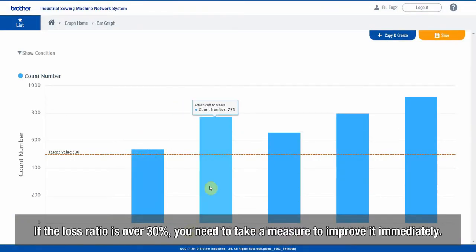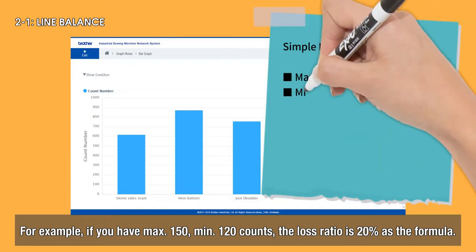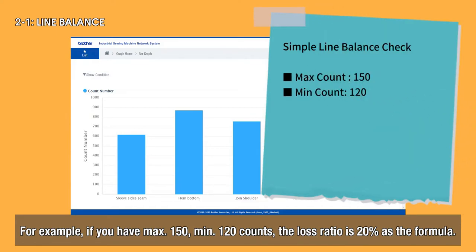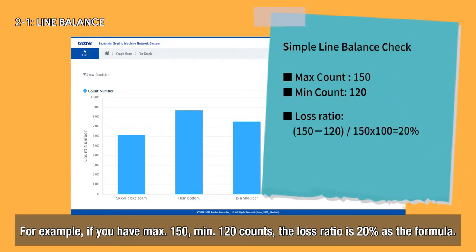If the loss ratio is over 30%, you need to take a measure to improve it immediately. Let me introduce how to calculate the loss ratio as a simple line balance check. For example, if you have max 150, minimum 120 counts, the loss ratio is 20% as the formula.